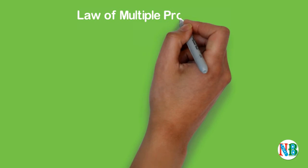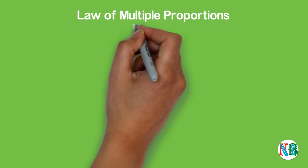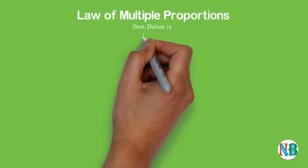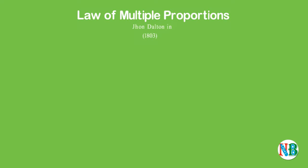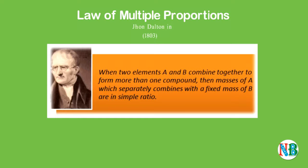Let us take law of multiple proportions. This law was proposed by Dalton in 1803. This law states that if two elements can combine to form more than one compound, the masses of one element that combine with a fixed mass of the other element are in the ratio of small whole numbers.